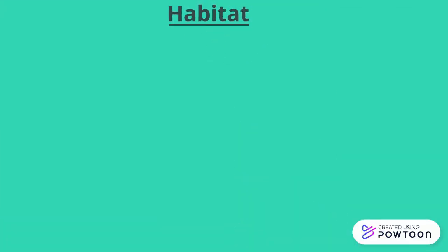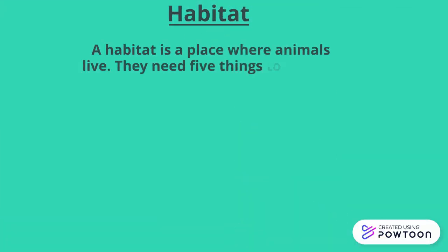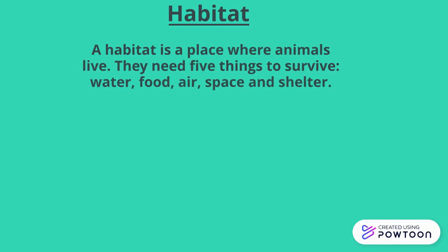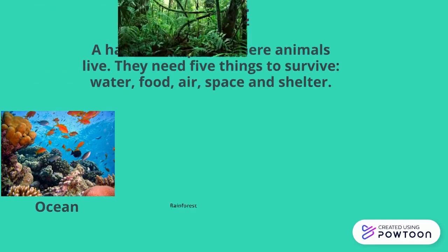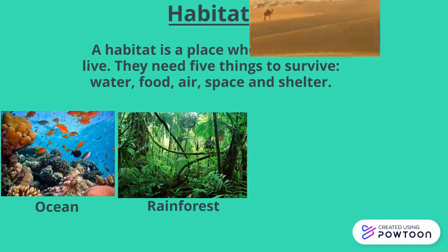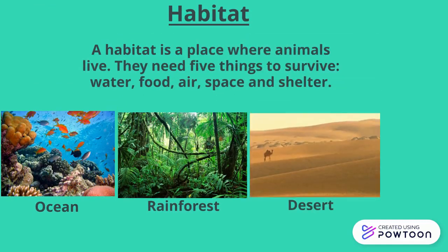Habitat: a habitat is a place where animals live. They need five things to survive: water, food, air, space, and shelter. And here you have some examples: the ocean, a rainforest, and the desert.